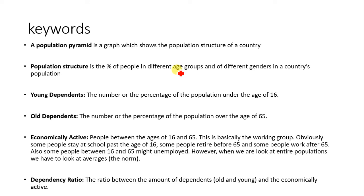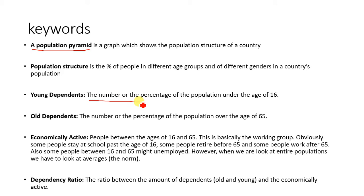There are certain keywords you need to understand to interpret the population structure of MEDCs and LEDCs effectively. A population pyramid is a graph which shows the population structure of a country. Population structure itself is the percentage of people in different age groups and of different gender in the country's population. Young dependent is the number or percentage of the population under the age of 16. Old dependent is the number or percentage of the population over the age of 65. Economically active refers to people between the ages of 16 and 65 — this is basically the working group.